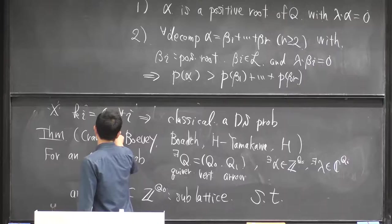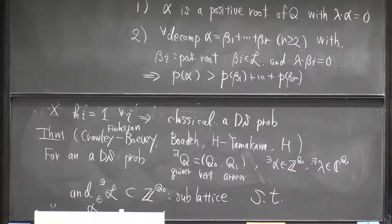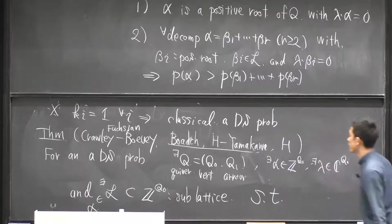Crawley-Boevey considered the Fuchsian case and solved this problem there. In joint work with Daisuke, we could get analogous results. The point is the Poincaré rank being less than or equal to one, and finally we find the same situation could be done even with outer singularity numbers.